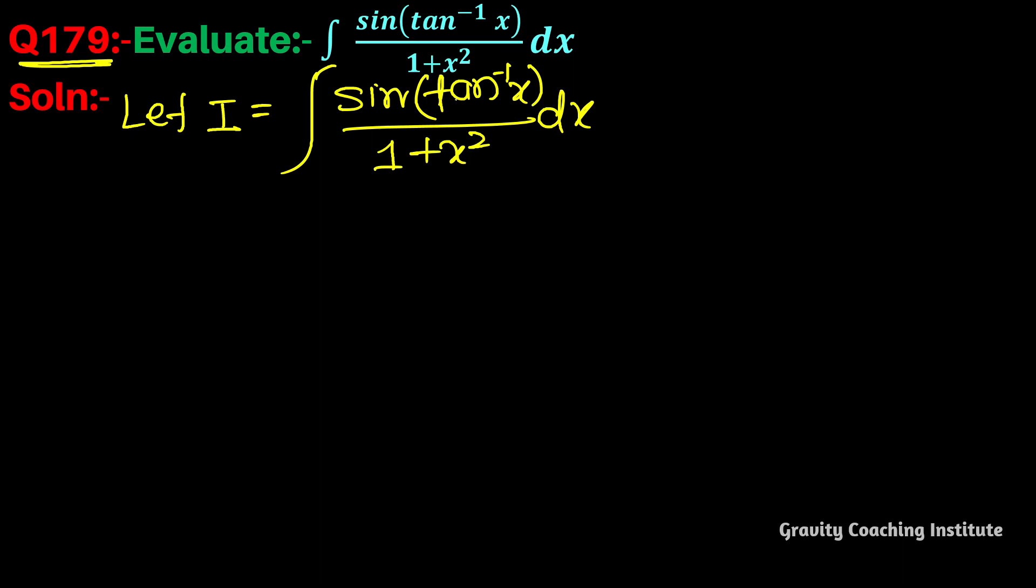If we differentiate tan⁻¹x, we get 1/(1+x²). So putting tan⁻¹x = t, now differentiate with respect to t. The differentiation of tan⁻¹x is 1/(1+x²), so dx = dt/(1+x²).